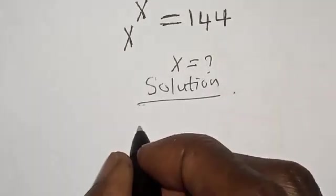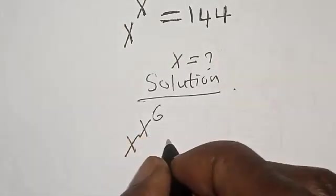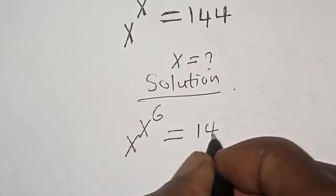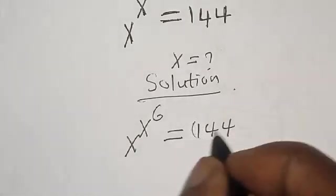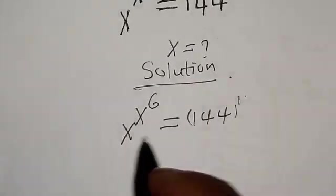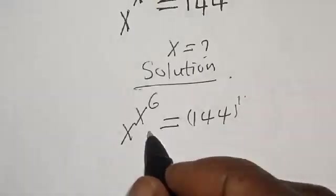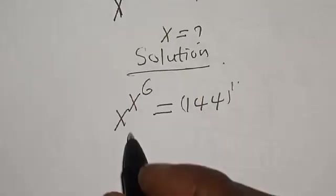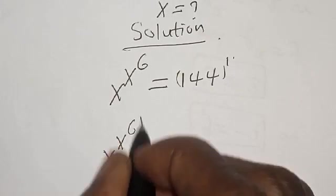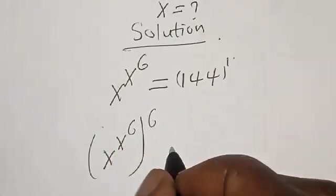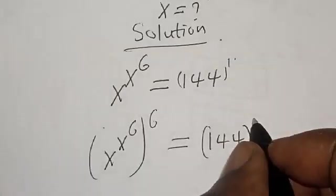The given equation is s raised to power s raised to power six is equal to 144. Now remember this is also raised to the power of one. Let's multiply the exponent of both sides by the power of six. Then s raised to power s raised to power six, all raised to power six, is equal to 144 raised to power of six.